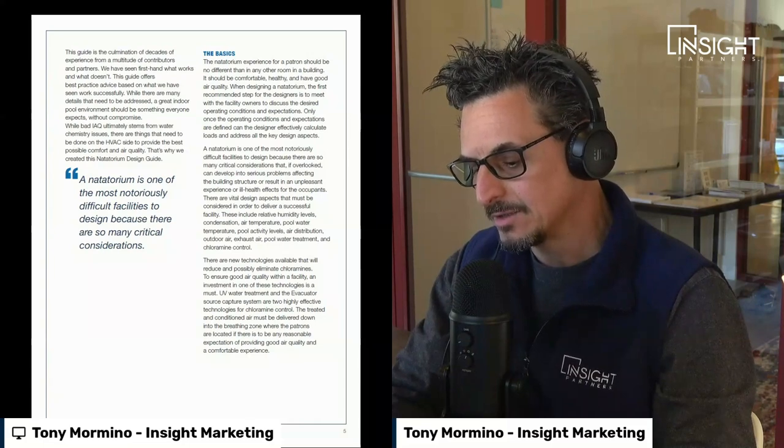There are new technologies available that will reduce and possibly eliminate chloramines. To ensure good air quality within a facility, an investment in one of these technologies is a must. UV water treatment and the Evacuator source capture system are two highly effective technologies for chloramine control. The treated and conditioned air must be delivered down into the breathing zone where patrons are located if there is to be a reasonable expectation of providing good air quality and a comfortable experience.